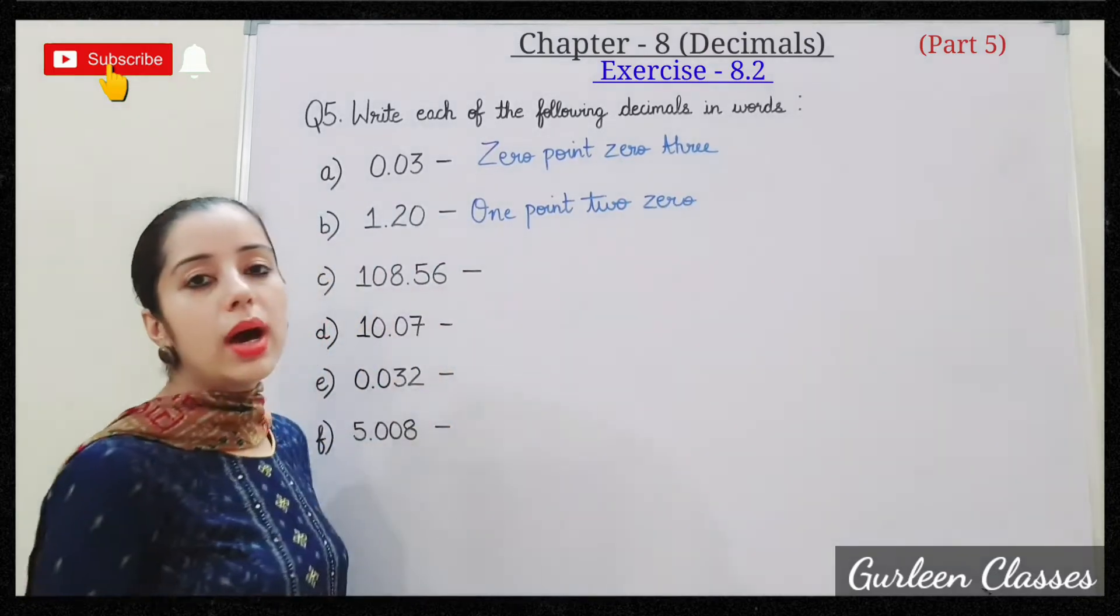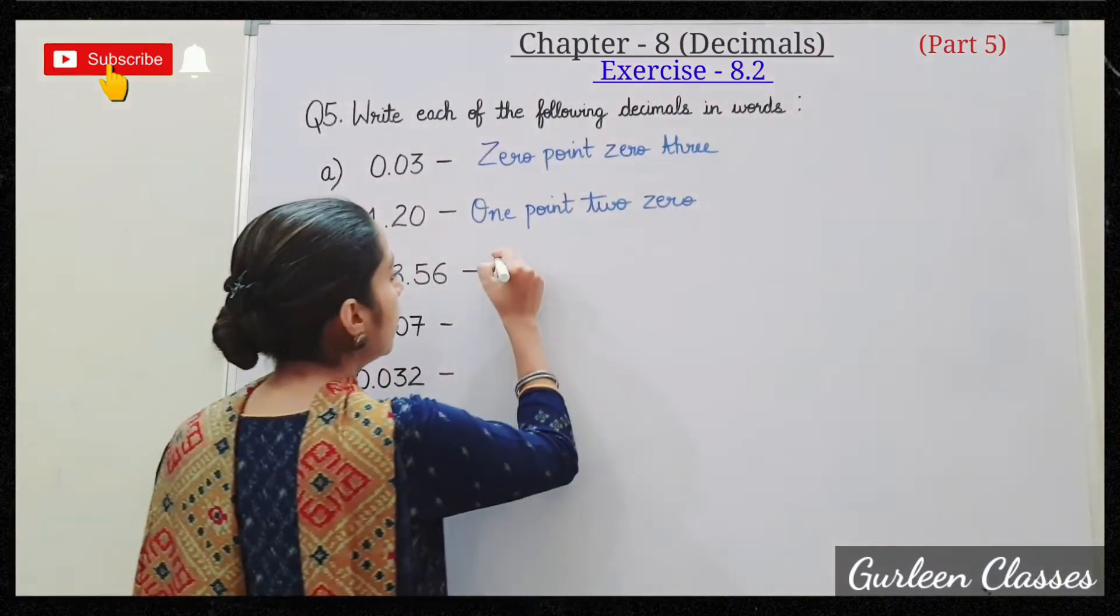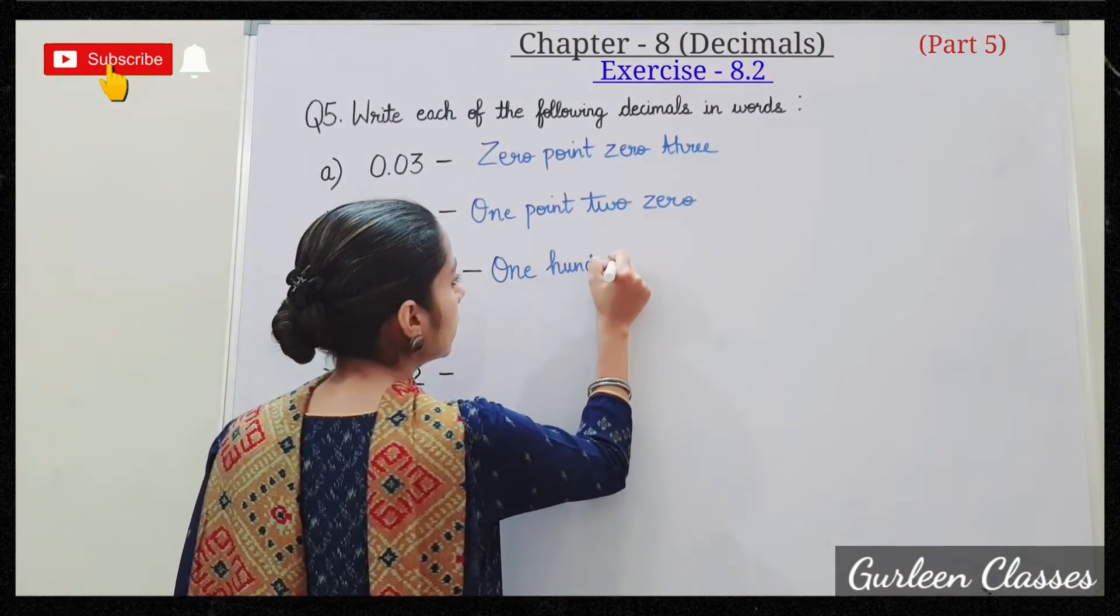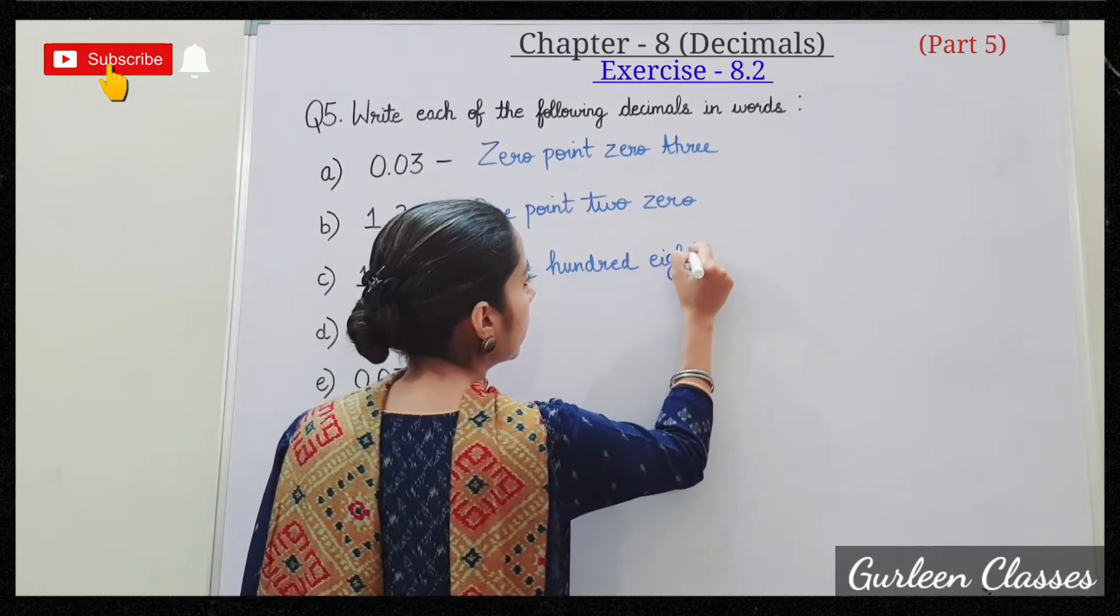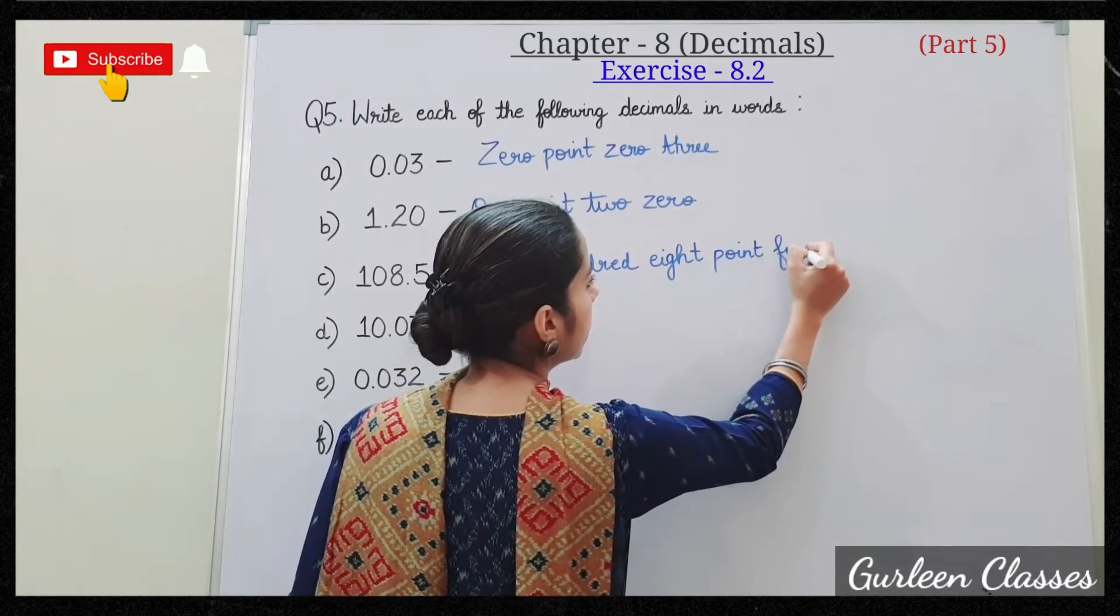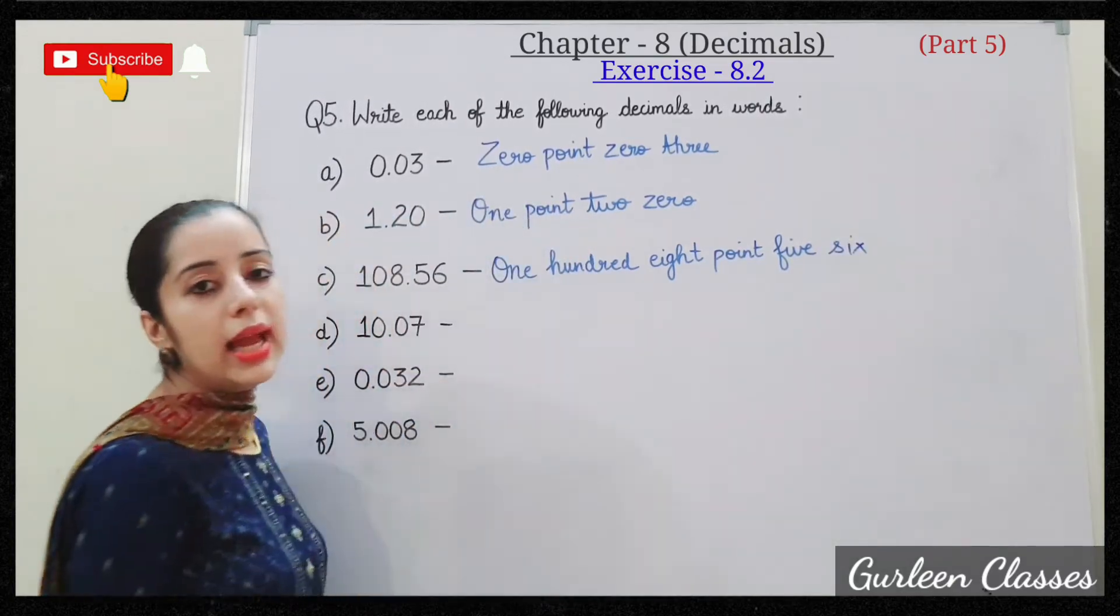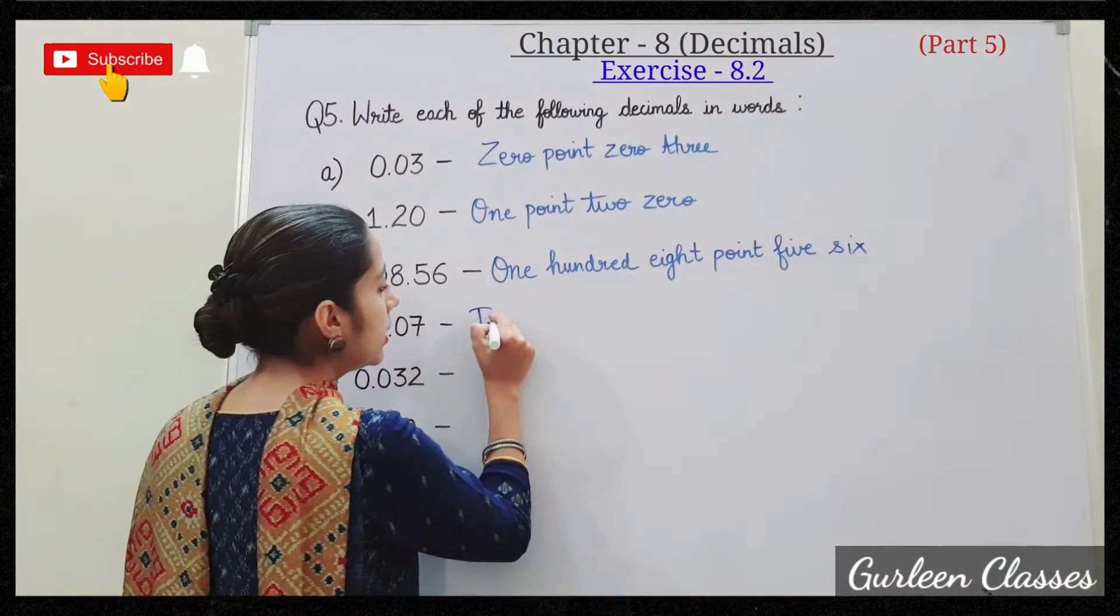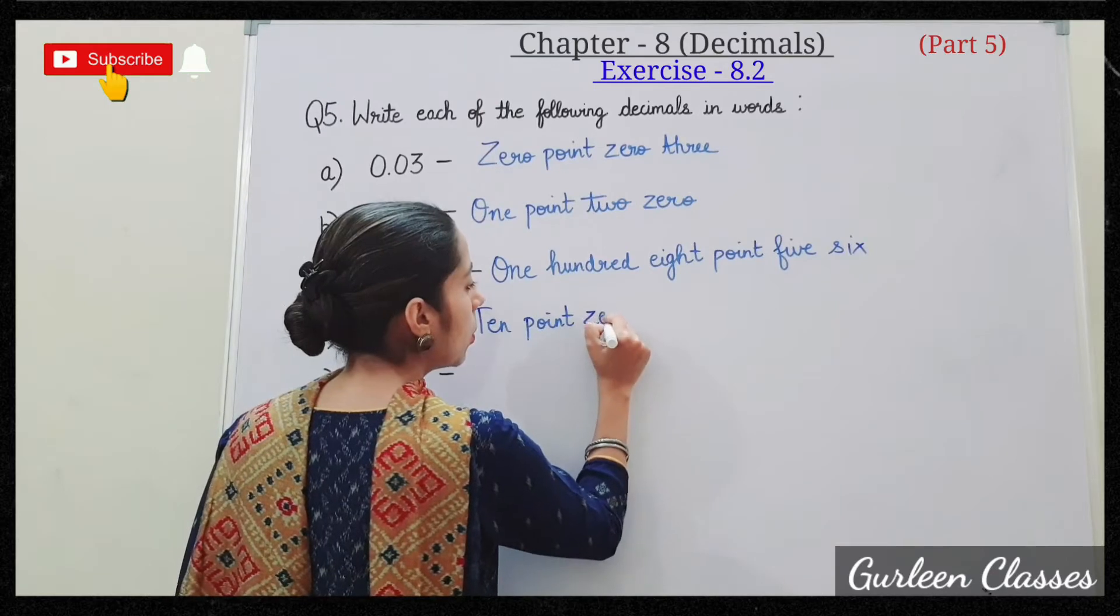C: 108.56. So write here: one hundred eight point five six. D: 10.07. So write here: ten point zero seven.